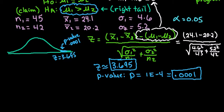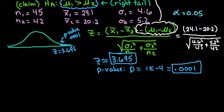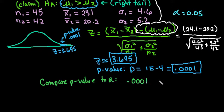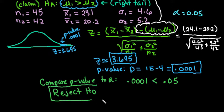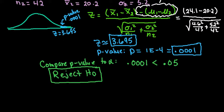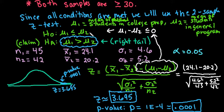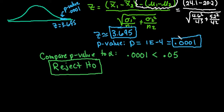Our decision rule is to compare the p-value to alpha. Our p-value of 0.0001 is definitely less than our alpha of 0.05, so we reject the null hypothesis. Remember, you always either reject the null or fail to reject the null — you never make a conclusion about the alternative directly. Rejecting the null provides extremely strong evidence in support of the alternative, especially with a z-score greater than 3.